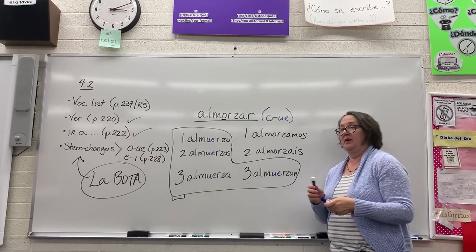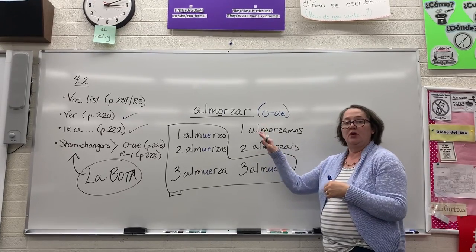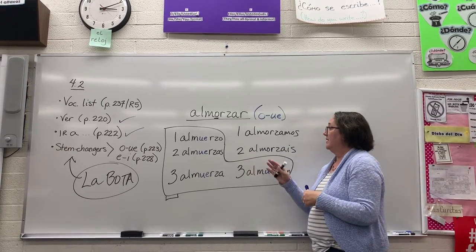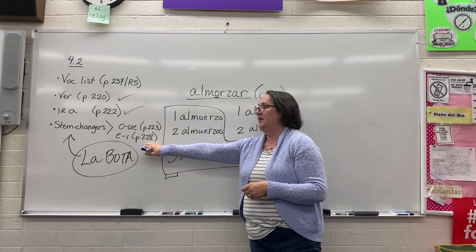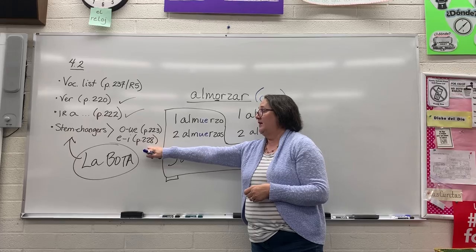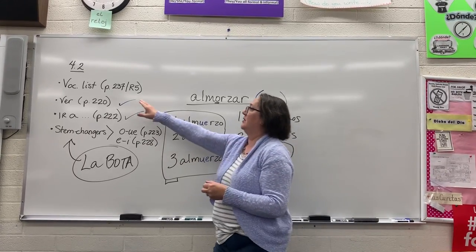When you have... there's going to be a list in the vocab list, quite a few verbs that go from... a list of verbs in our vocab list, a lot of them go from o to ue, and this is just an example. And then on page 228 we have an explanation of how to do e to i. These are also on your vocab list on page 237.